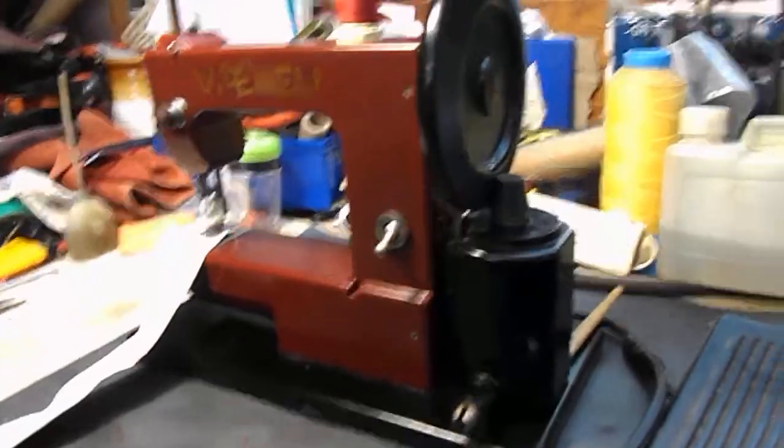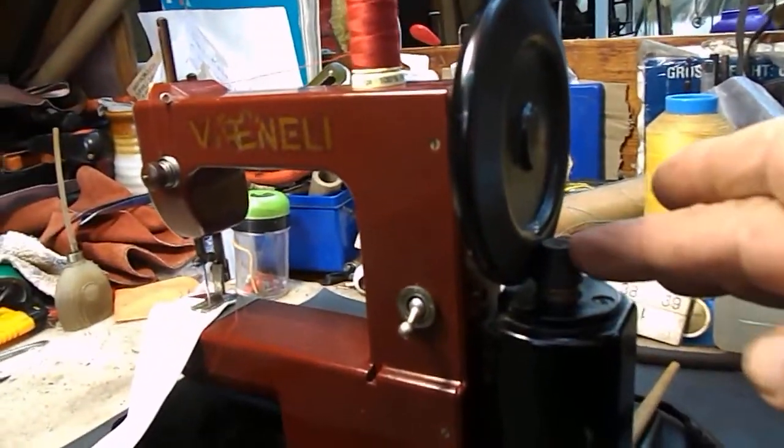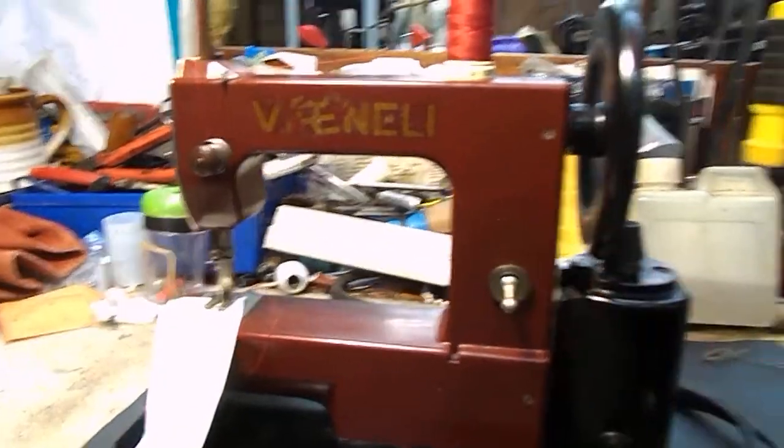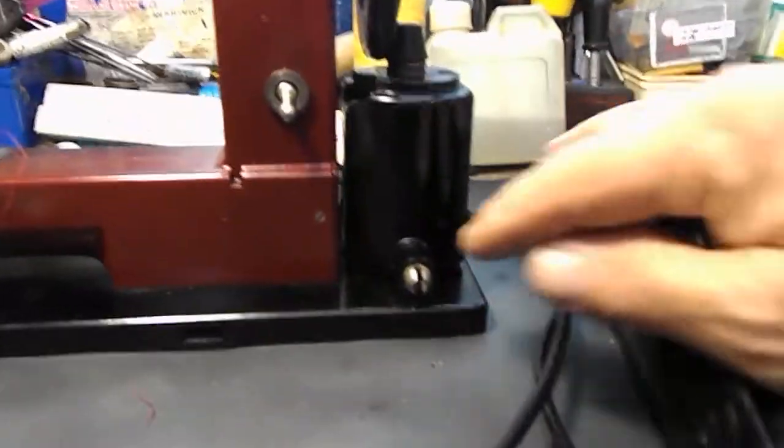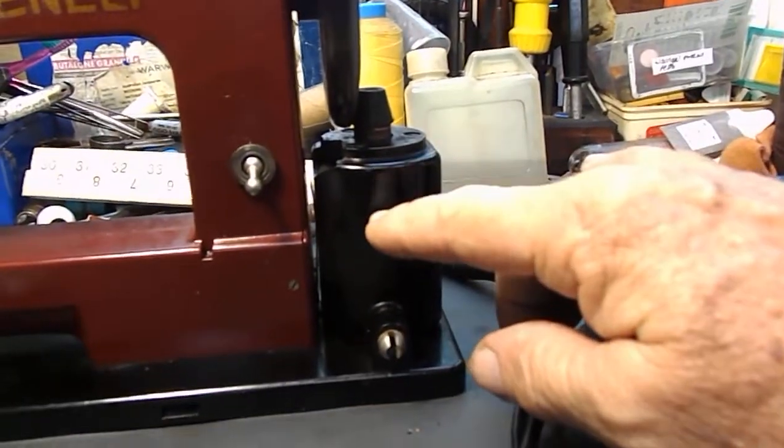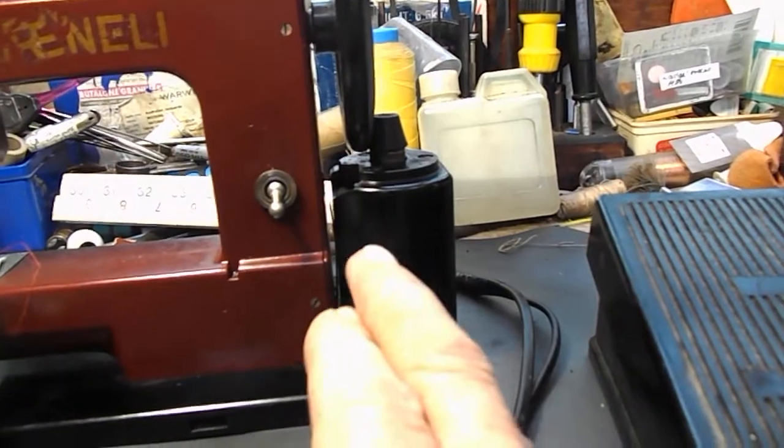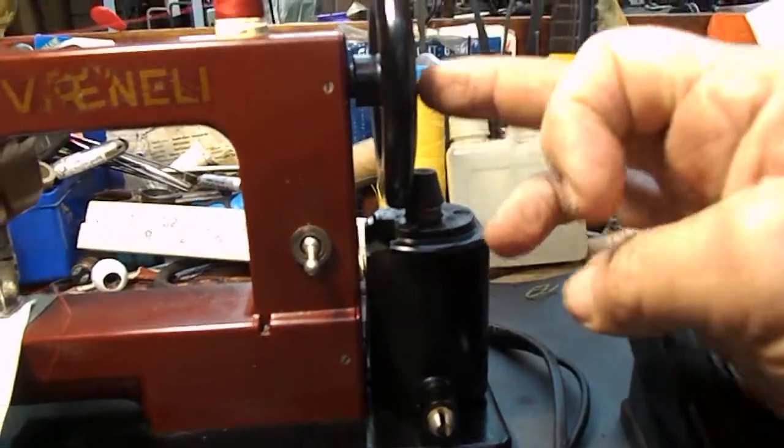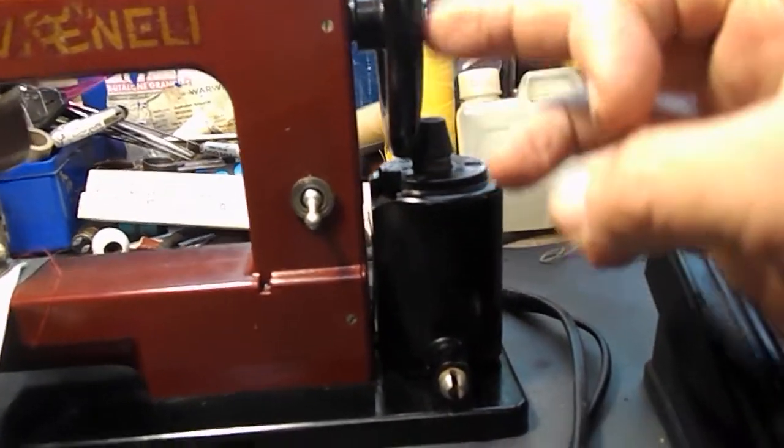As you can see, it's got a motor with a friction drive, an on-off switch, and it originally had a little knee lever. This motor is pivoted, so by using the knee lever you would push the friction drive onto the wheel which would give you power.